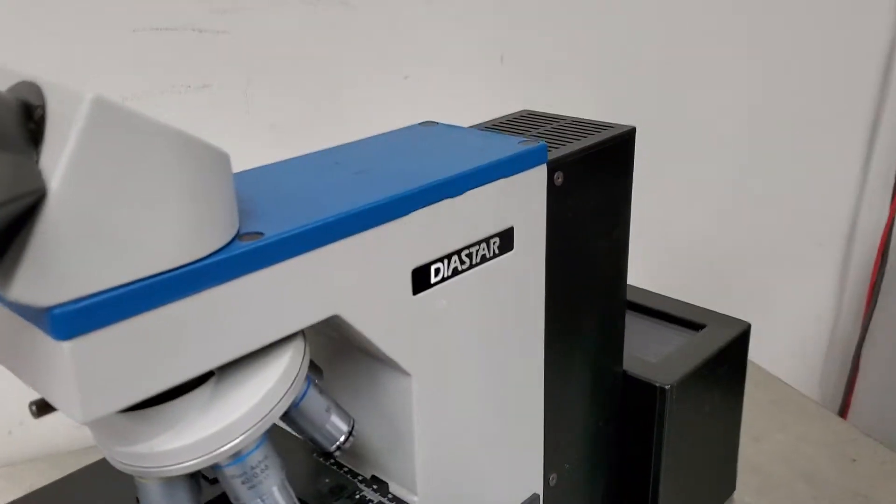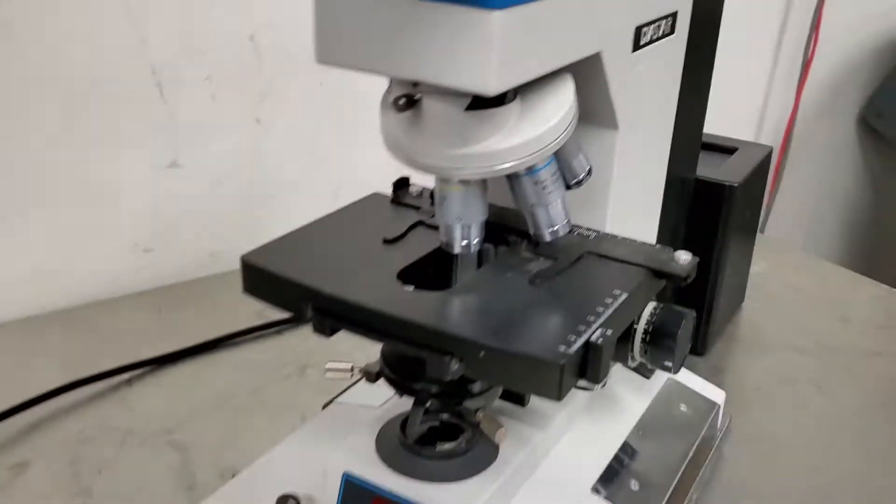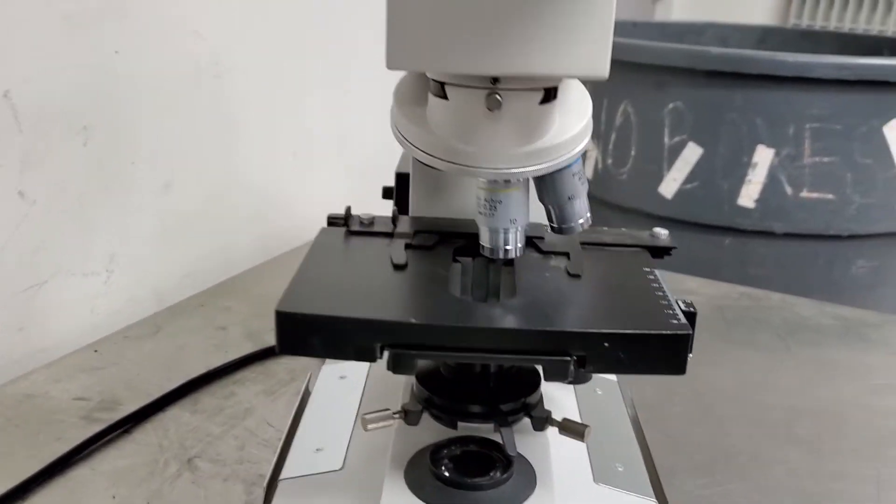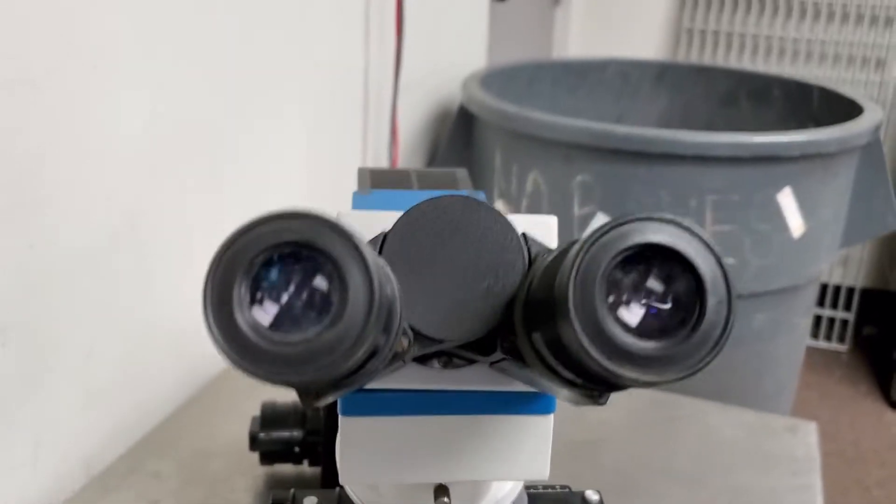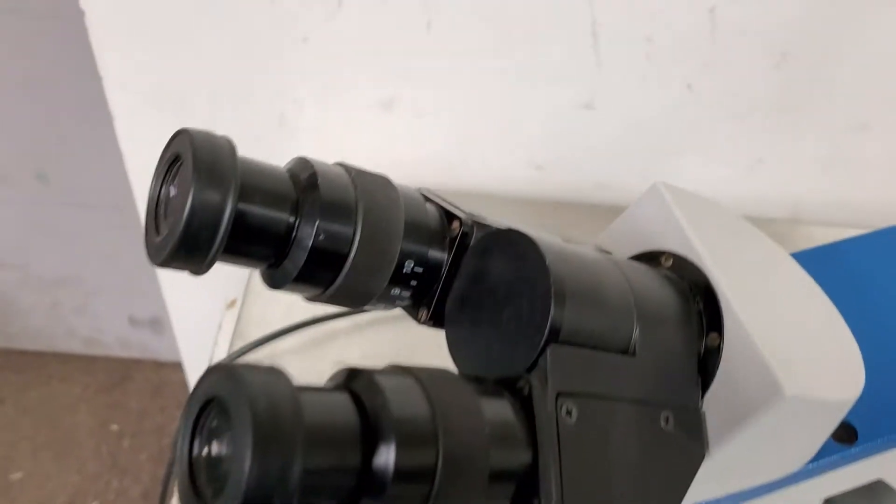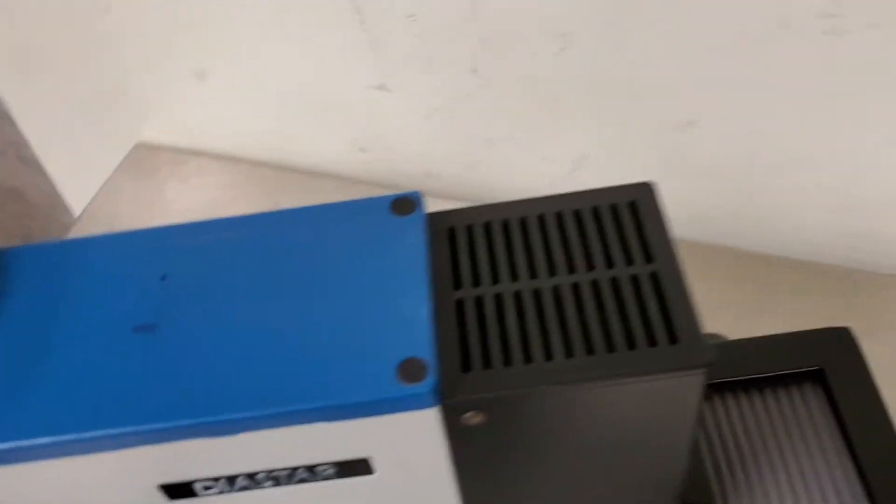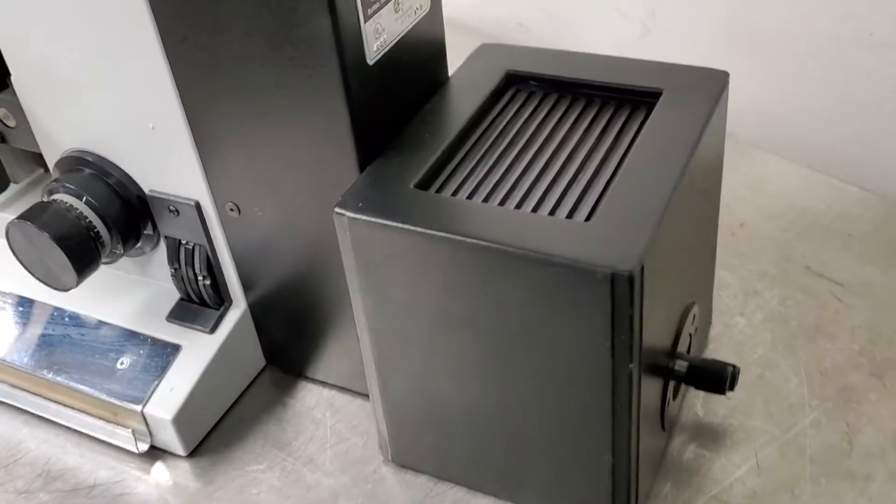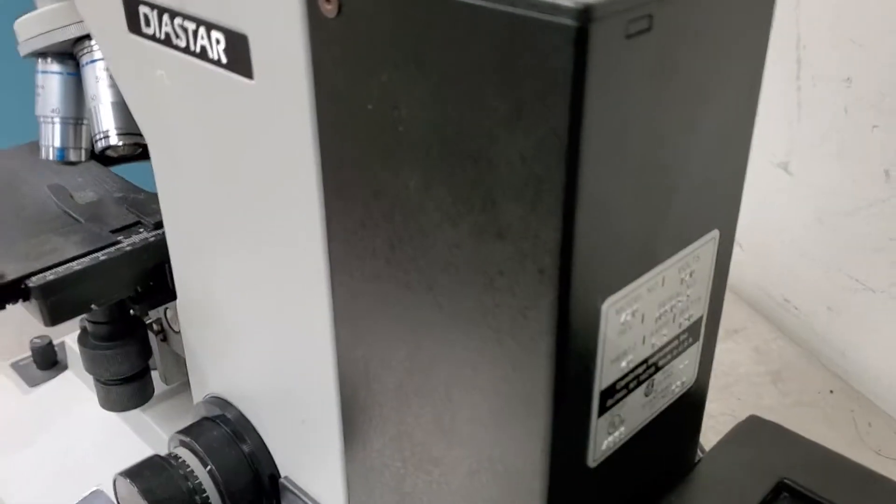You're bidding on a Diestar Reicher Metal 420 microscope. This came out of the lab stockroom of a pharmaceutical company.